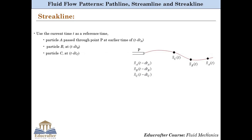In the same way, particle C is currently at some location and was at point P earlier at time t minus dtC. And the same for particle D. So particles A, B, C and D are currently at different locations, but all of them have earlier passed through a common point P of the domain at different instants of time.